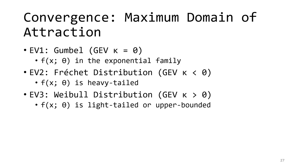An important topic to consider is what is called the maximum domain of attraction. This describes the relationship between the distribution of the parent population and the distribution of block maxima taken from it. When the parent population is in the exponential family — for example, the normal, exponential, and gamma distributions — the maxima are in the Gumbel MDA and tend to have a GEV shape parameter very close to zero, though convergence can be very slow. Heavy-tailed parent populations tend to fall into the Fréchet MDA, often found in precipitation frequency analyses. Light-tailed or upper-bounded populations fall into the Weibull MDA and tend to converge to the GEV distribution the fastest.